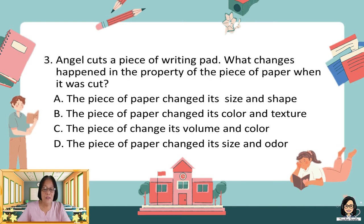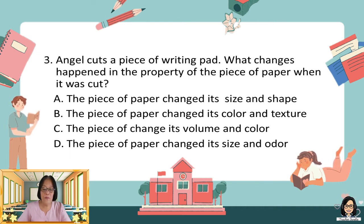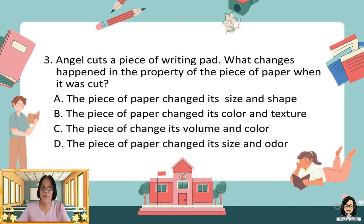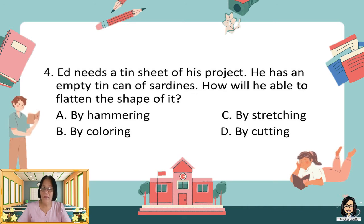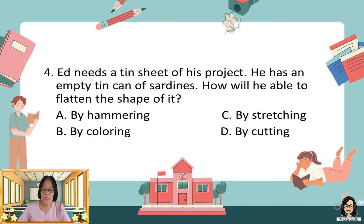Number three: Angel cuts a piece of writing pad. What changes happen in the property of the pieces of paper when it was cut? A. The pieces of paper change their size and shape. B. The pieces of paper change their color and texture. C. The pieces of paper change their volume and color. D. The pieces of paper change their size and odor. Number four: Jed needs a tin sheet for his project. He has an empty tin can of sardines. How was he able to flatten the shape of it? A. By hammering. B. By coloring. C. By stretching. D. By cutting.